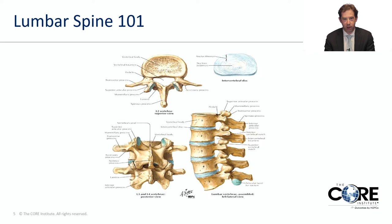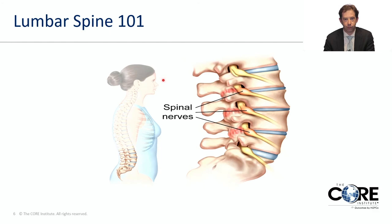This is lumbar spine 101. This slide shows you the basic structure of the lumbar spine. Specific structures we look at include the discs, which sit between the vertebral bodies, the facet joints, which are little joints connecting each level of the spine, and the nerve roots, which come out of the holes in the side of the spine. A common cause of pain is spinal stenosis, where we look at the canal where all the nerves travel through.